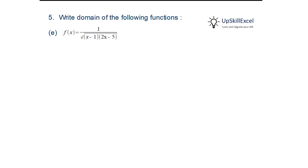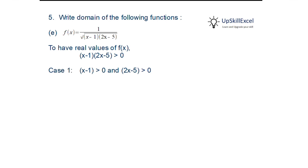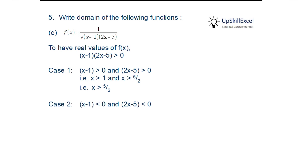Write the domain of f(x) = 1/√((x−1)(2x−5)). For real values, (x−1)(2x−5) > 0. First case: both factors > 0 gives x > 1 and x > 5/2 — AND condition satisfied only when x > 5/2. Second case: both factors < 0 gives x < 1 and x < 5/2 — satisfied only when x < 1. So the domain is x < 1 or x > 5/2.